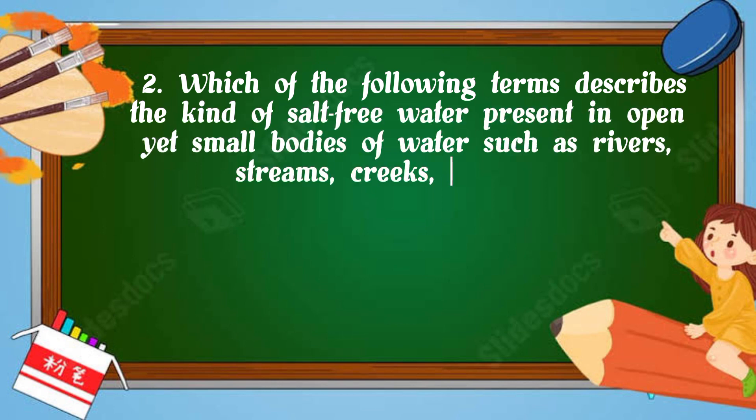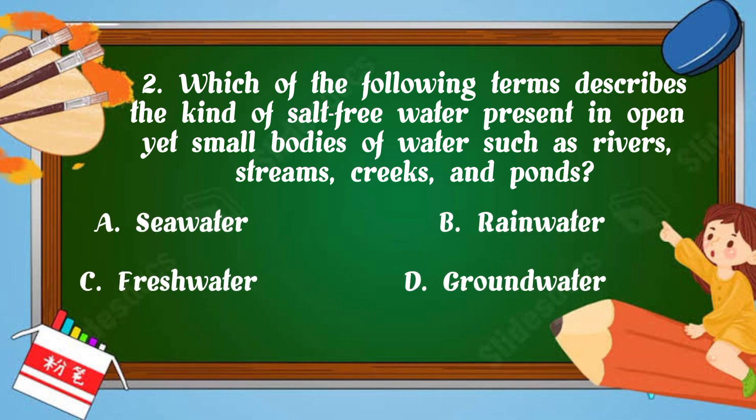Number 2: Which of the following terms describes the kind of salt-free water present in open yet small bodies of water such as rivers, streams, creeks, and ponds? A. Seawater, B. Rainwater, C. Freshwater, D. Groundwater. Your timer starts now. The correct answer is letter C, Freshwater.